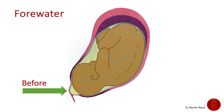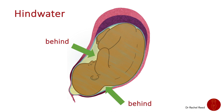The amniotic sac is described as having two sections: the forewaters, which are in front of the baby's head, and the hindwaters, which are behind the baby's head. They are not separate, and the fluid can move between the two. Fluid from behind the baby can get squeezed past the baby's head into the forewaters during a contraction. So that term is really used to describe areas of the sac rather than the fluid, because the fluid is moving about.